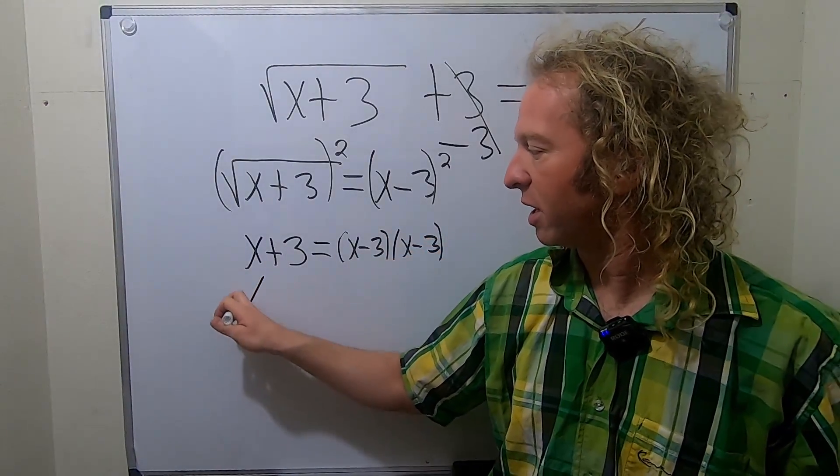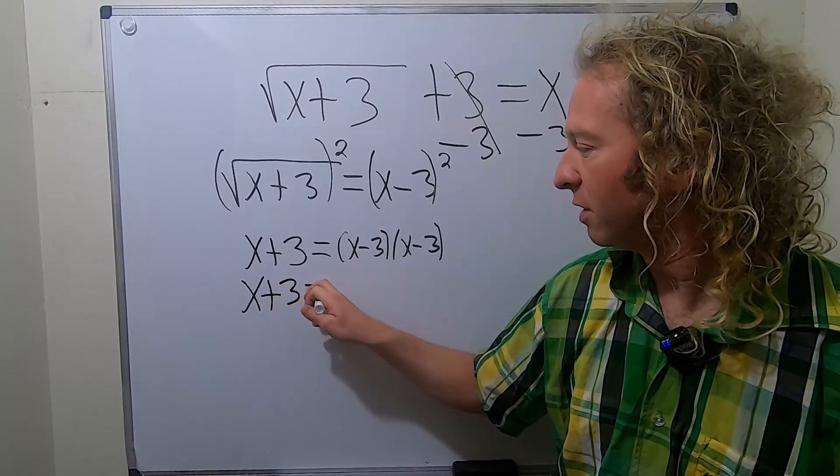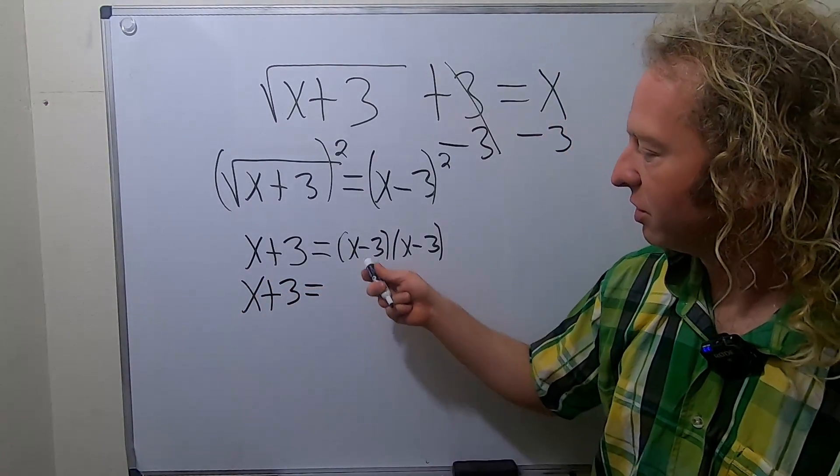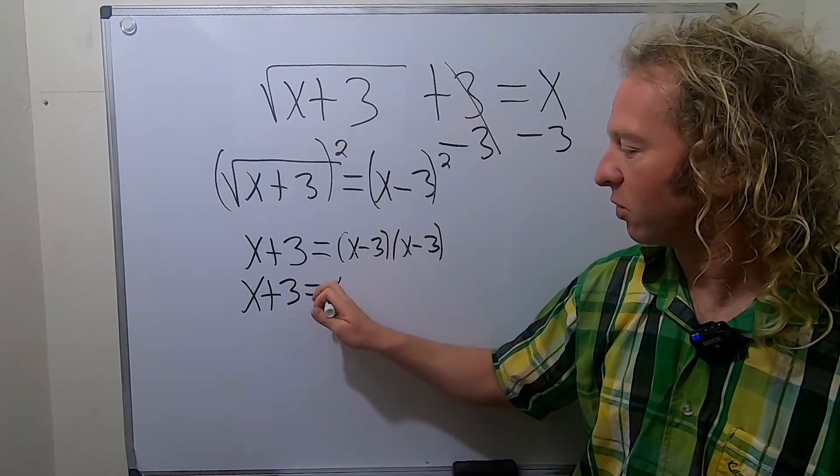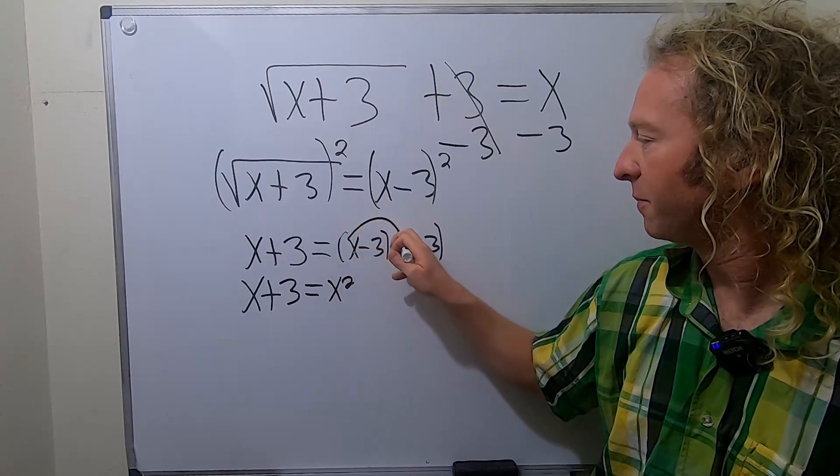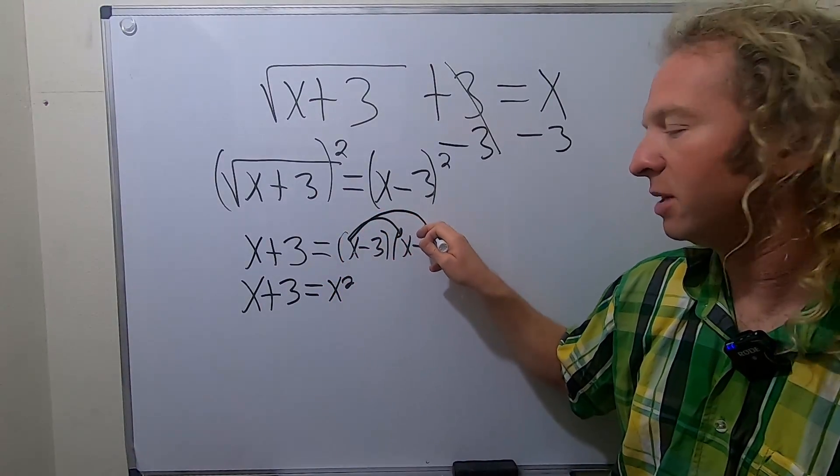So I'm going to write this again: x minus 3. This is equal to, let's see, x times x is x squared. Then this times this will be minus 3x, and then this times this is minus 3x, and this times this is 9.